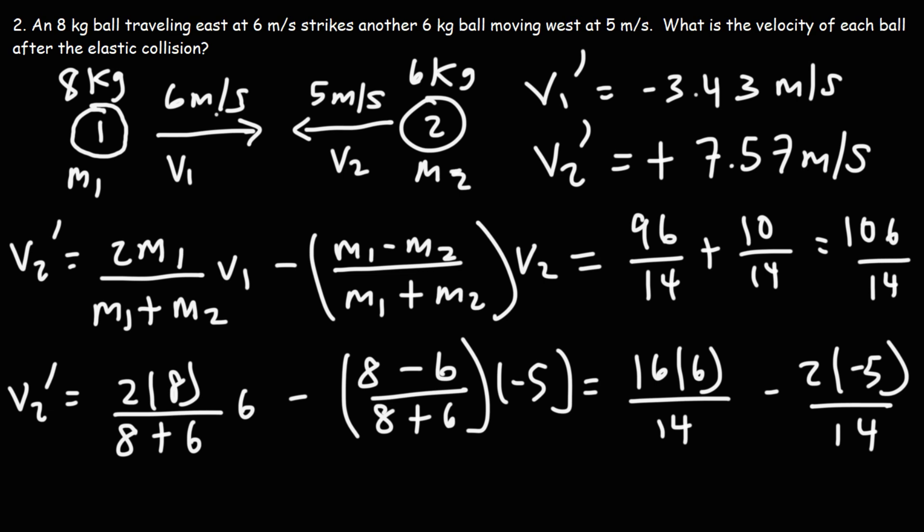So let's think about what this means. V1 is now negative. So it was going to the right, but now that it's negative, that means that it's moving to the left. V2 is positive. It was negative before going to the left, but now that it's positive, it's going to the right. So these two balls, which had a head-on collision, they now, they bounce back off of each other, going in the opposite direction.